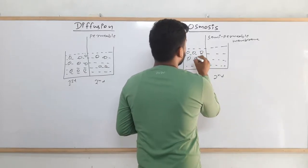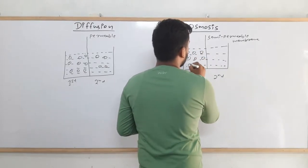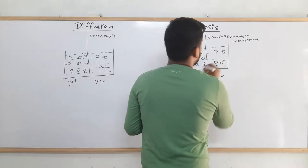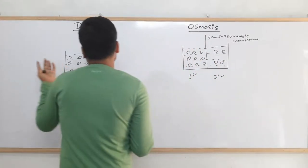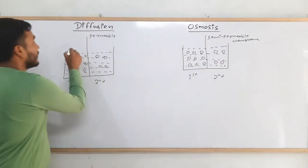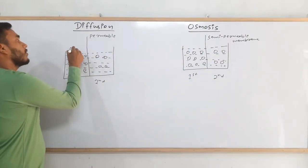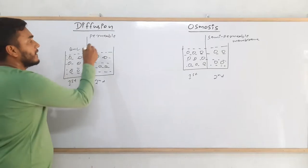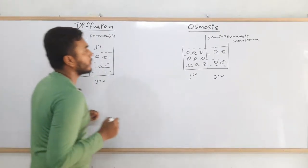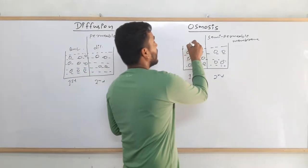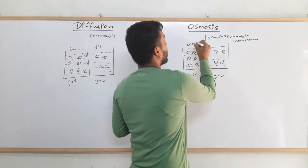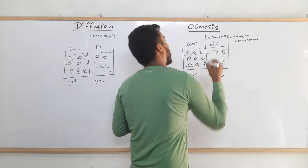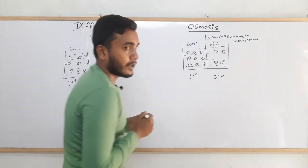I am considering the same type of example for both sides. So you can easily say this is the concentrated solution and this one is the dilute solution — on both the diffusion side and the osmosis side.